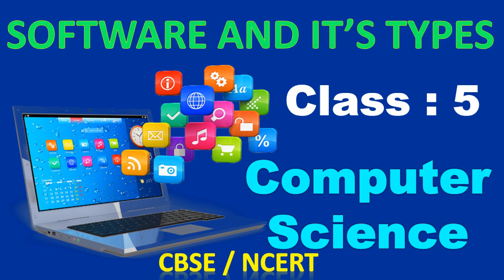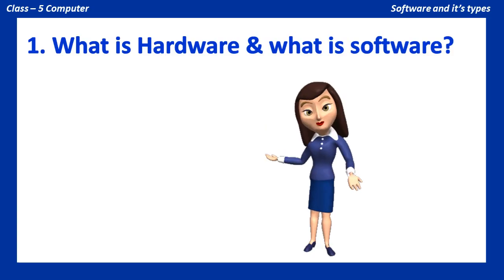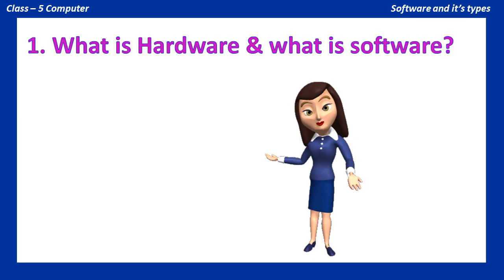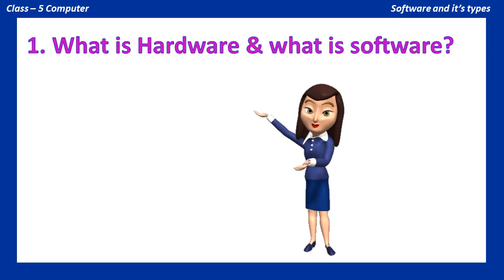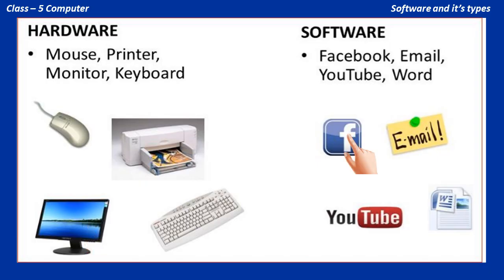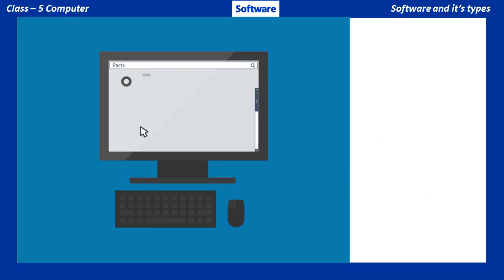This is Class 5 Computer Science. Before starting the session, let us recapitulate the previous class. Can you tell me, what is hardware and what is software? Hardware is the device that we can touch. Look at the picture — we can touch the mouse, printer, keyboard, and monitor. These are called hardware of a computer. And software is that part of a computer that we cannot touch. For example, Facebook, email, word processor, and YouTube. To run hardware, the software is very important. Now let us learn more about software and its types.